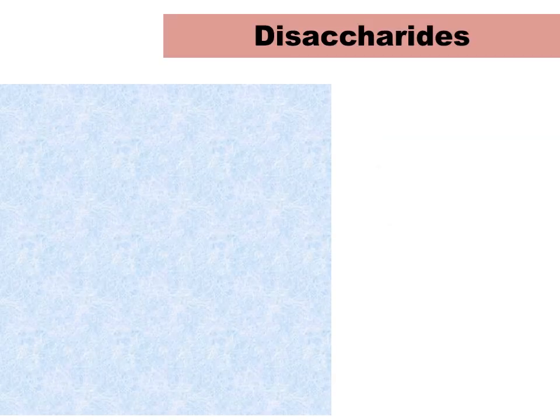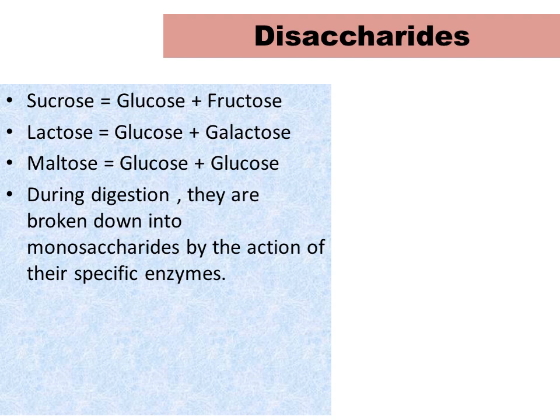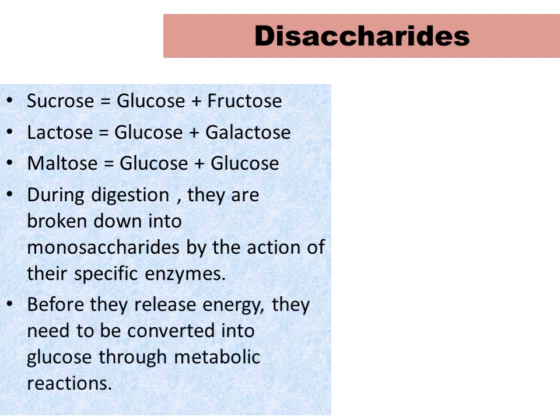Coming to disaccharides, we know that there are 3 disaccharides: sucrose, which is made up of glucose and fructose; lactose, which is made up of glucose and galactose; whereas maltose is a mixture of 2 units of glucose only. We can see that in all 3 disaccharides, glucose is present. During digestion, disaccharides are broken down into their constituent monosaccharides by the action of specific enzymes. Before they release energy, they need to be converted into glucose through metabolic reactions.